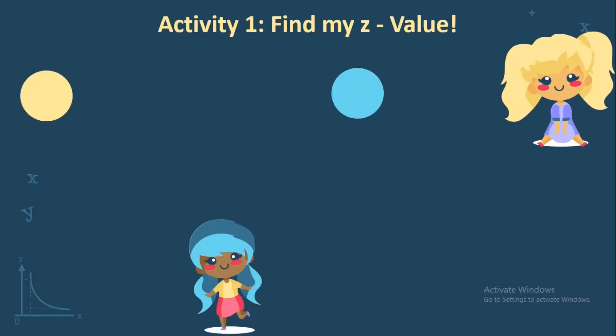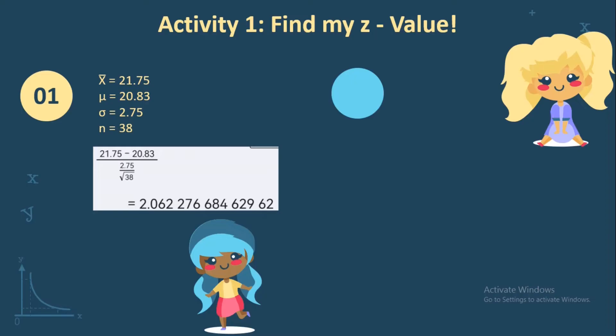Now let us move to Activity 1: Find my Z value. For number 1, the given values are: sample mean of 21.75, population mean of 20.83, population standard deviation of 2.75, and sample size of 38. Using the formula, we substitute: sample mean minus population mean over 2.75 (the population standard deviation), divided by the square root of 38.